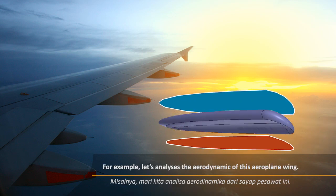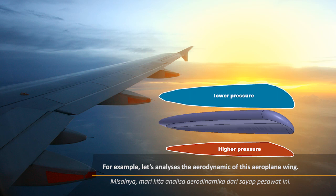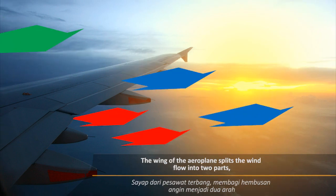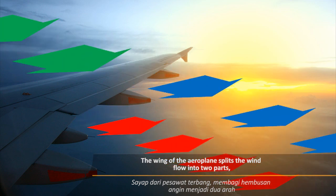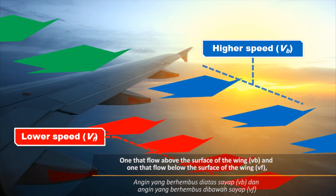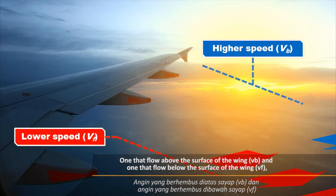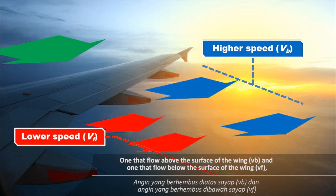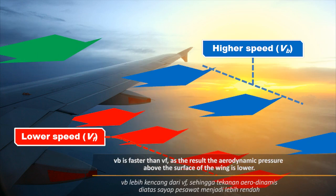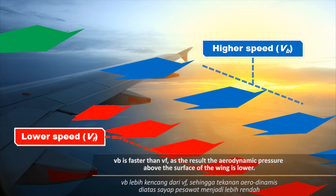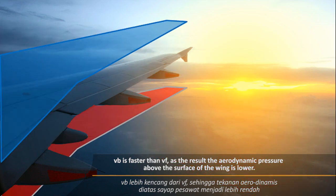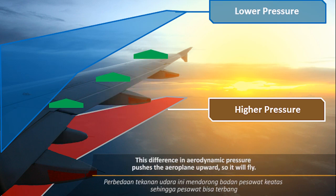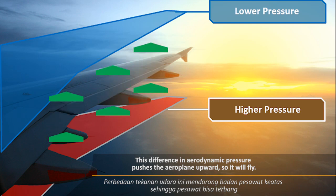For example, let's analyze the aerodynamics of an aeroplane wing. The wing of the aeroplane splits the wind flow into two parts: one that flows above the surface of the wing, VB, and one that flows below the surface of the wing, VF. VB is faster than VF. As a result, the aerodynamic pressure above the surface of the wing is lower. This difference in aerodynamic pressure pushes the aeroplane upwards, so it will fly.